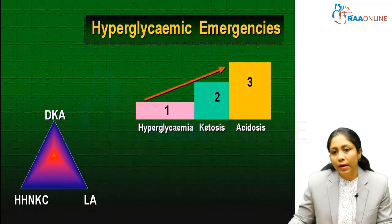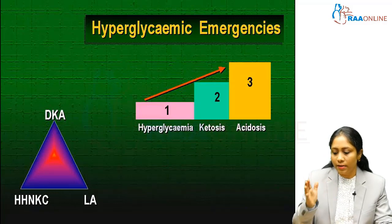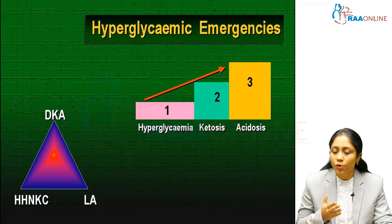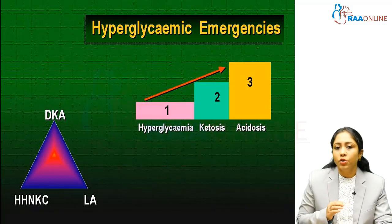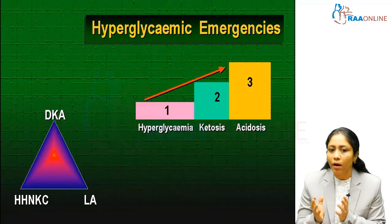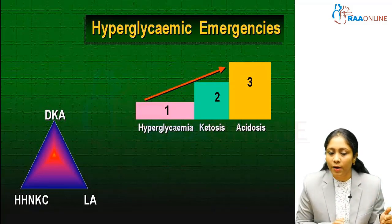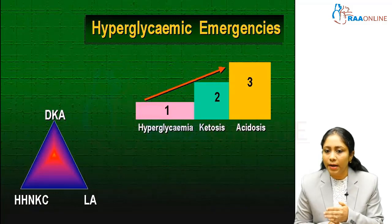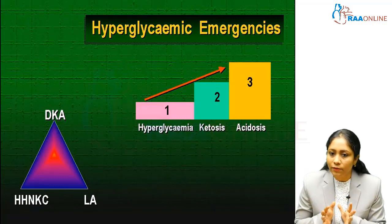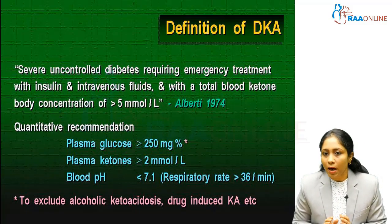When we talk about hyperglycemic emergencies, it is generally a combination of all the things on the screen. It can mean hyperglycemia per se, which can also be associated with ketosis and acidosis. The typical presentation can lie anywhere along the spectrum — diabetic ketoacidosis, a hyperosmolar state, or a state in which lactic acidosis also prevails.